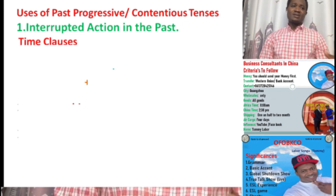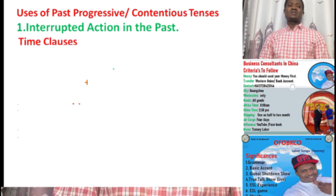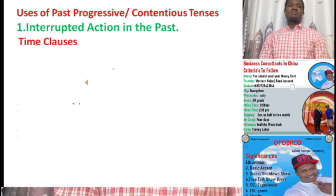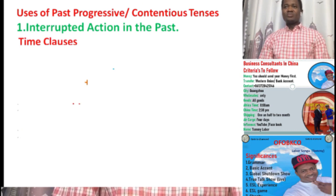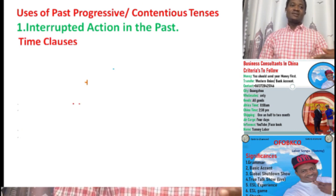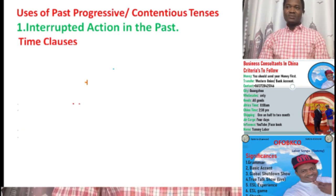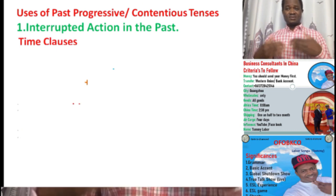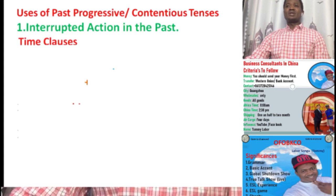When we talk about this interruption, we're going to talk about what we call time clauses. We all know clauses — we have the main clause and the subordinate clause. Here we're going to talk about the main clause and the time clause. When we talk about time clauses, we have words that indicate time. These are subordinate clauses — they are time clauses.